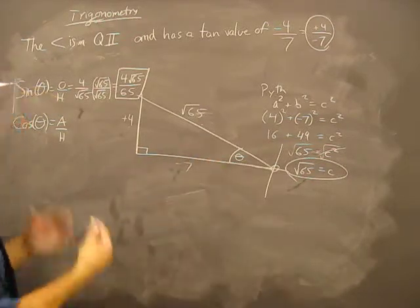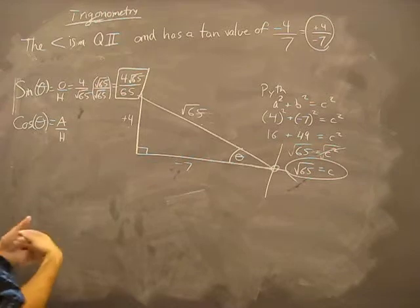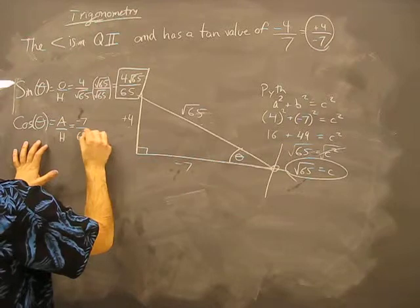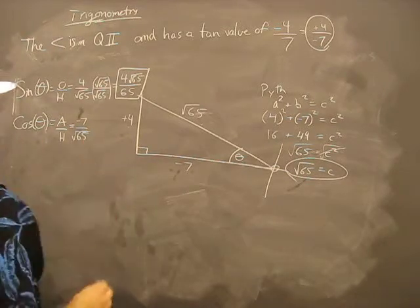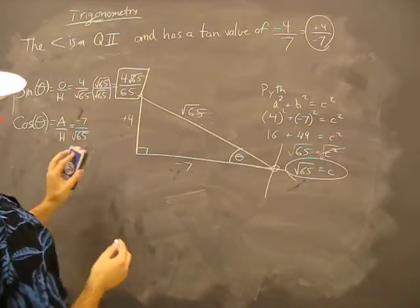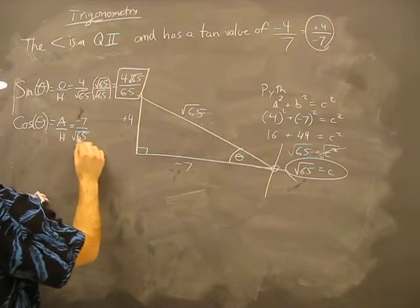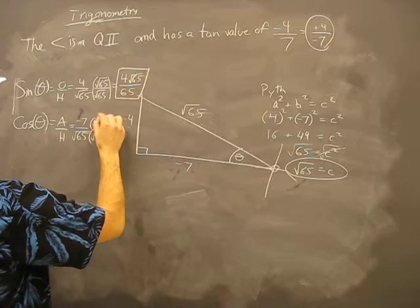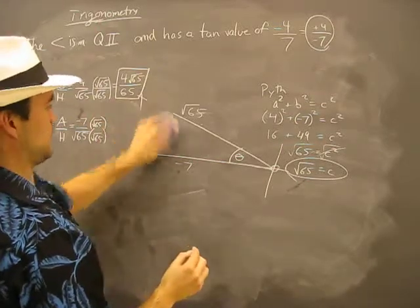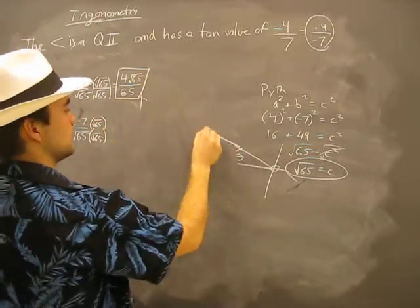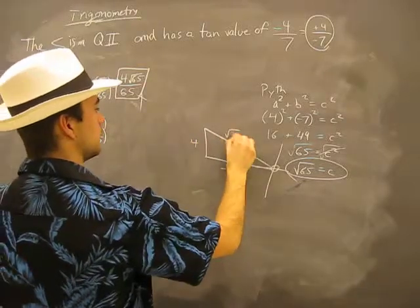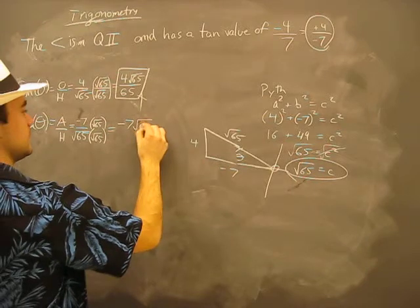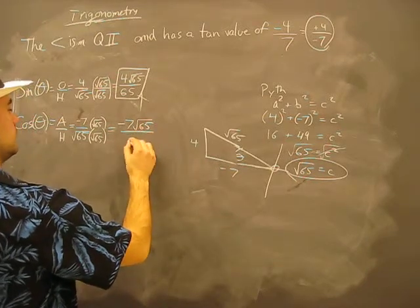So, it's the thinking about it which is new. Adjacent, minus 7 over root 65. Oh, whoops. Same thing. I want to get rid of the radical sign. So, we're going to multiply the top and bottom by root 65. And what I get is negative 7 root 65 over 65.